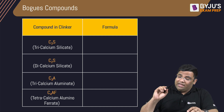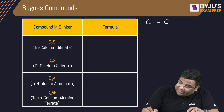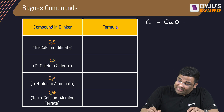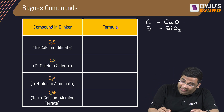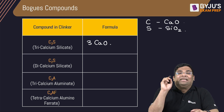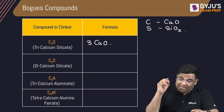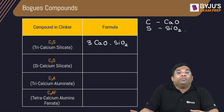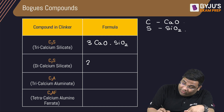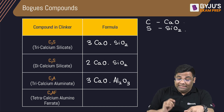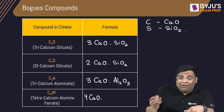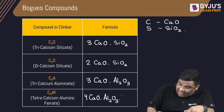You should know their formulas. Here, 'C' represents calcium oxide (CaO), and 'silicate' represents SiO₂. So Tricalcium Silicate is 3CaO·SiO₂. Dicalcium Silicate is 2CaO·SiO₂. Tricalcium Aluminate is 3CaO·Al₂O₃. The last one, Tetracalcium Alumino Ferrite, is 4CaO·Al₂O₃·Fe₂O₃.